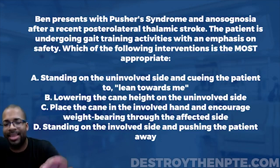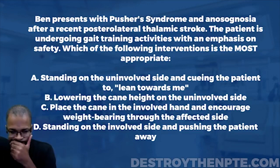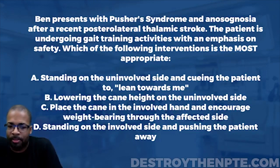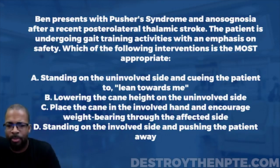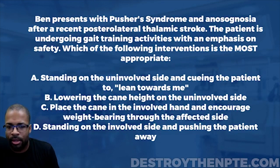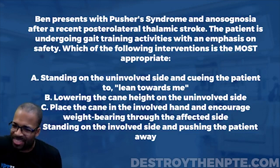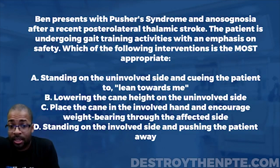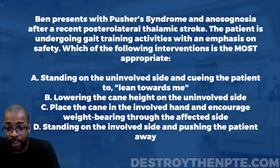Answer B says lowering the cane height on the uninvolved side. The patient has a cane on the uninvolved side, and lowering the cane height causes the patient to shift their weight over to that side. Think about it — if the cane is a smaller height, you have to lean over toward it. Lowering the cane height on the uninvolved side shifts the weight away from the weak side. That's a good strategy and a good intervention to get the weight away from the weak side. I like it, though let's check the remaining choices before confirming.